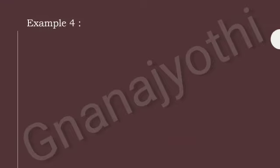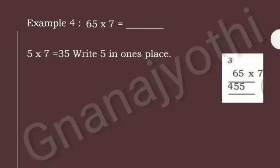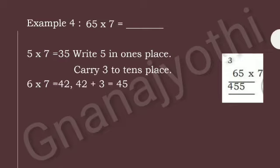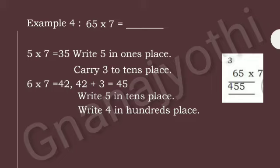Now, look at Example 4: Multiply 65 into 7. First, let us multiply 5 and 7. 5 sevens are 35. Write 5 in the ones place and carry 3 to the tens place. Next, multiply 6 and 7. If we multiply 6 and 7, we get 42. Then add carry 3 to the tens place and write 4 in the hundreds place. Therefore, if we multiply 65 into 7, we get 455.